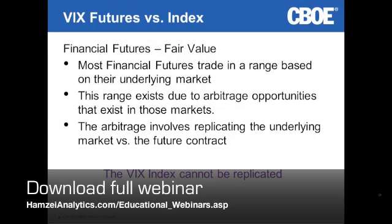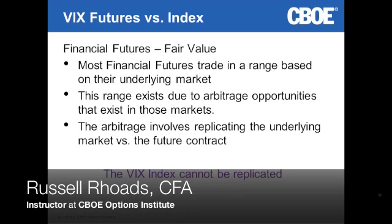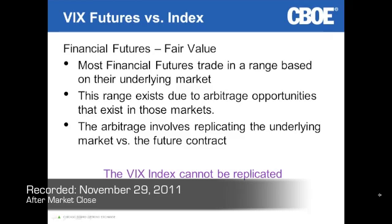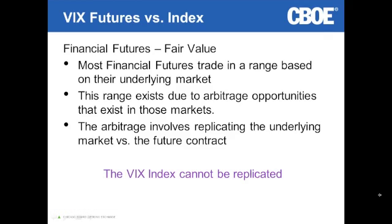Looking at the last slide, most financial futures trade in some sort of range around their underlying market. This is based on the types of arbitrage opportunities that exist. If the S&P futures get out of line relative to the S&P 500 index, the ARB guys can come in — let's say the futures run up and the index has not. They can short the S&P futures and put on a long position in a basket of stocks that replicates the S&P 500, or use spiders or some other replication method. Due to that arbitrage opportunity, the S&P futures pretty much stay in a certain range around the S&P 500 index over the course of a trading day.